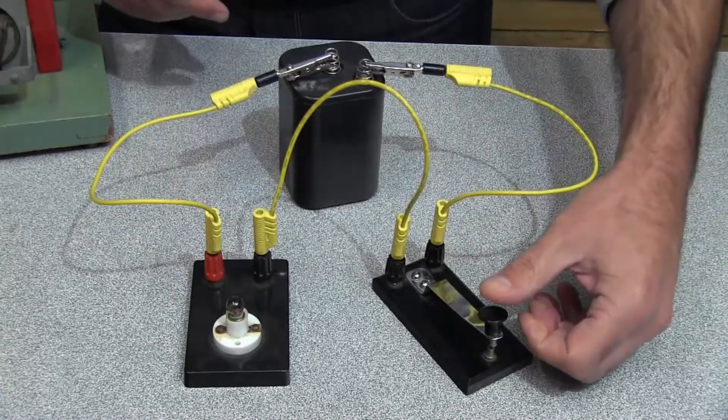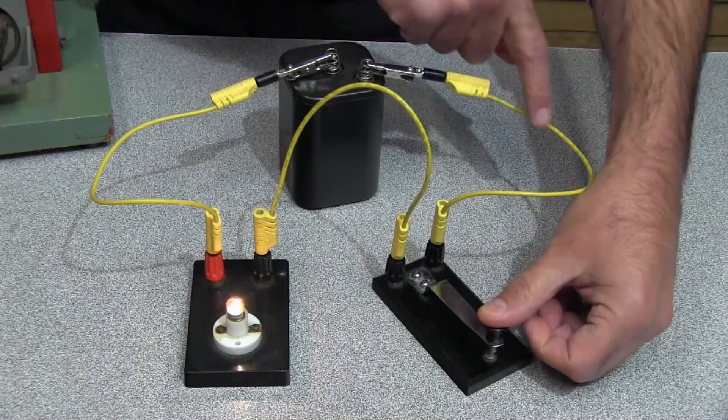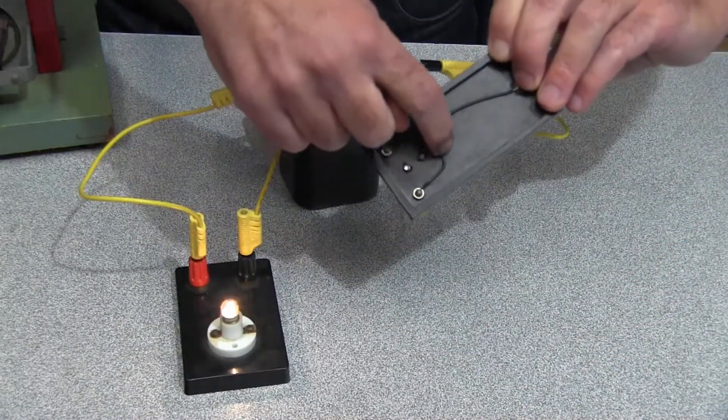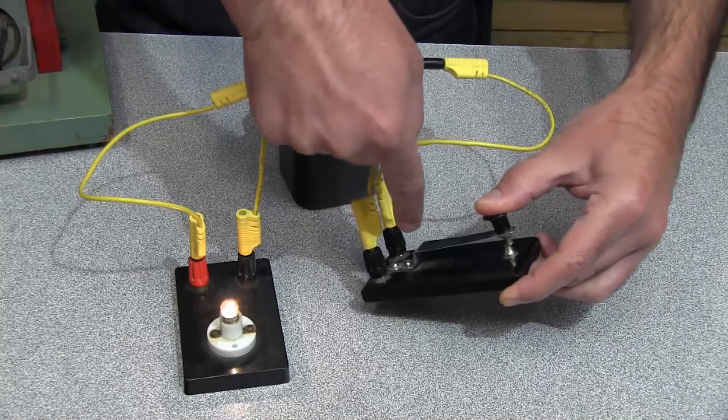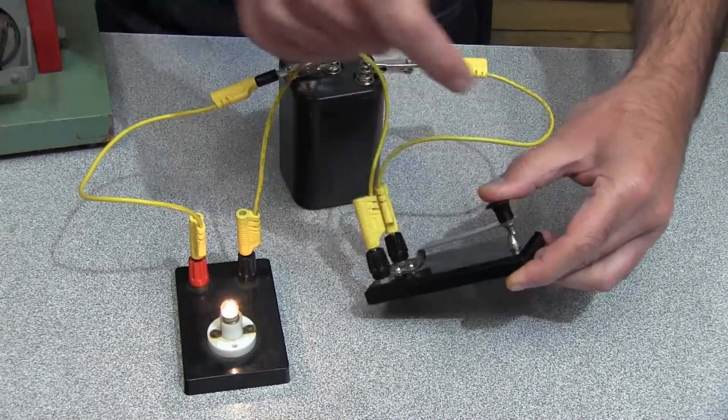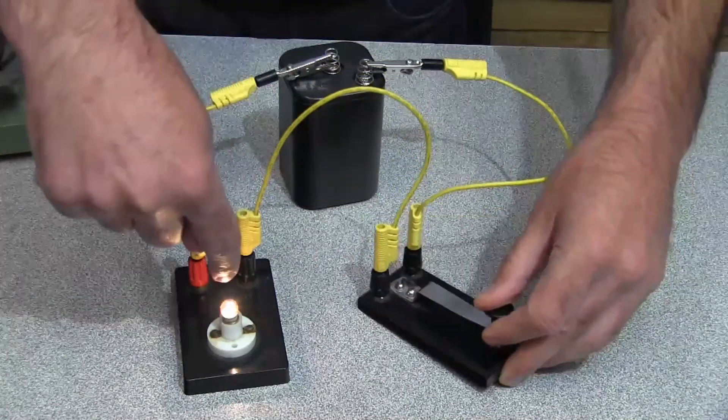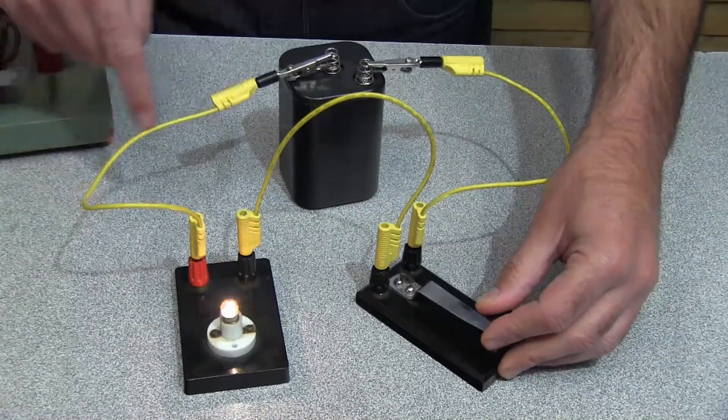Now when I press the switch, the electric current can flow through this wire, through this wire here, up and across this arm here to this connection here, through this wire, up and around through this wire, through the light globe,